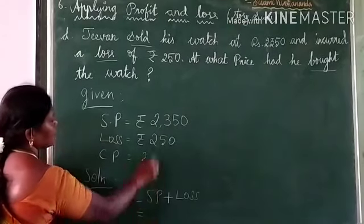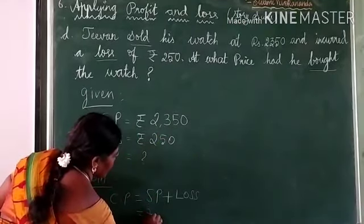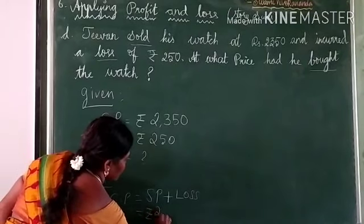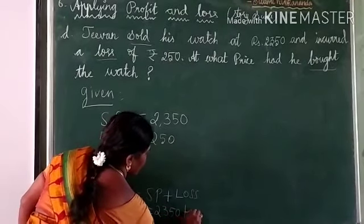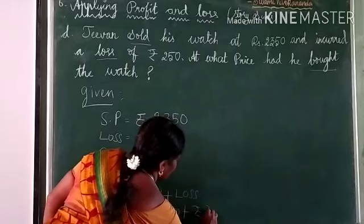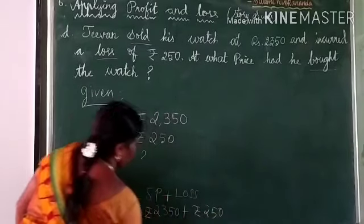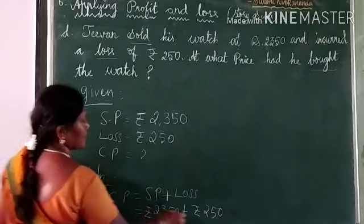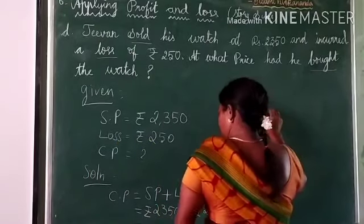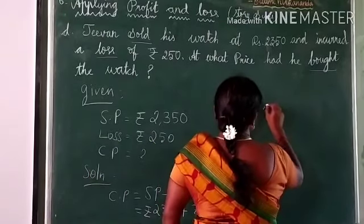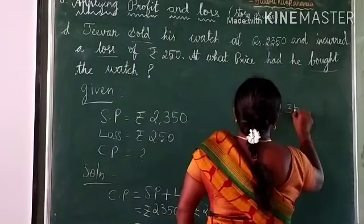So selling price is rupees 2350, plus the loss of rupees 250. We should add both values. Now let's work through the addition column: rupees 2350 plus rupees 250.